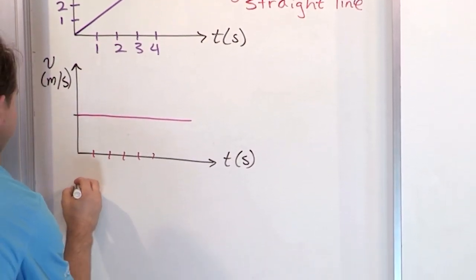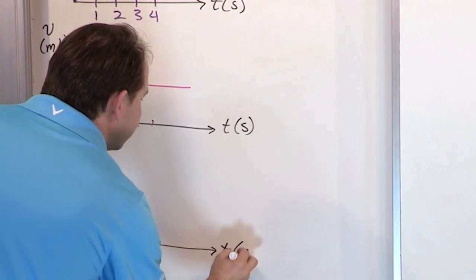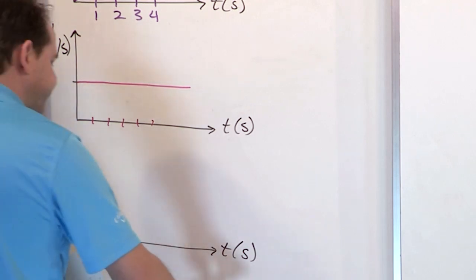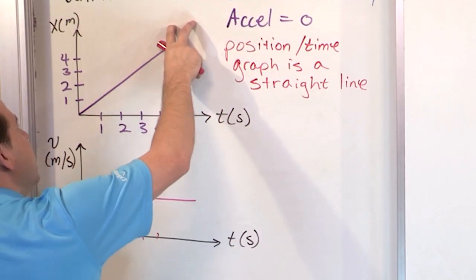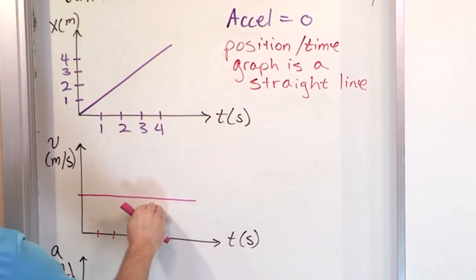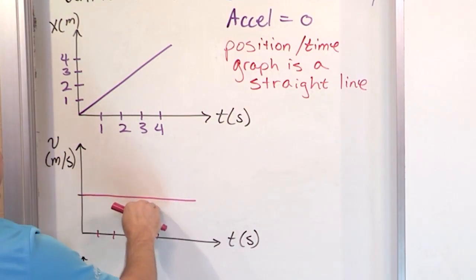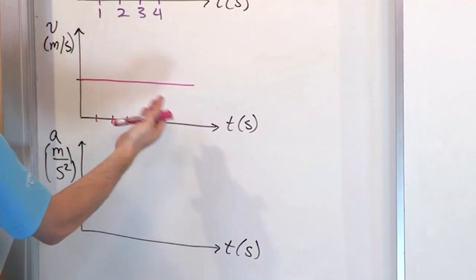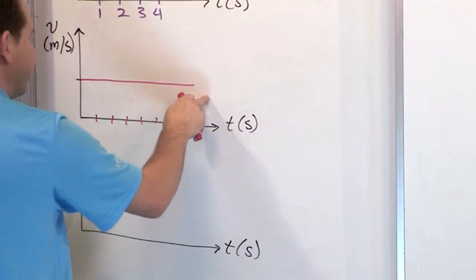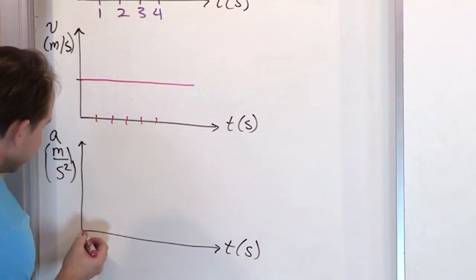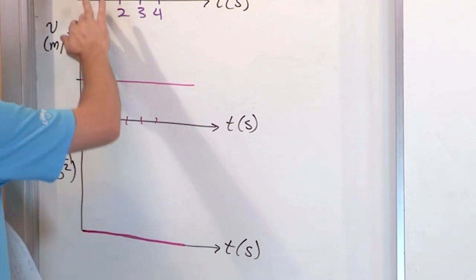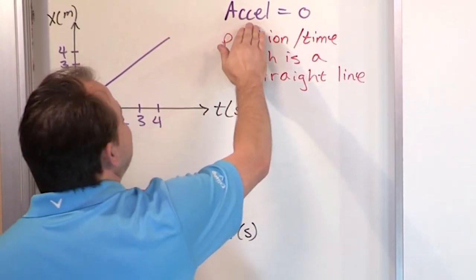To round things out, what does the acceleration curve look like in uniform motion? The unit of acceleration is meters per second squared. The position curve is a straight line, so the slope defines a constant velocity. The acceleration is the slope of the velocity curve. What is the slope of a flat line? The rise over run is zero because it never rises — it stays flat. So the acceleration curve is zero, literally zero. The acceleration is zero for uniform motion, exactly as we set up.